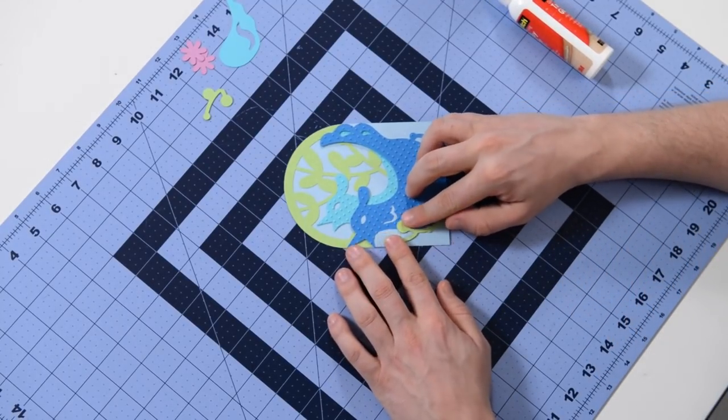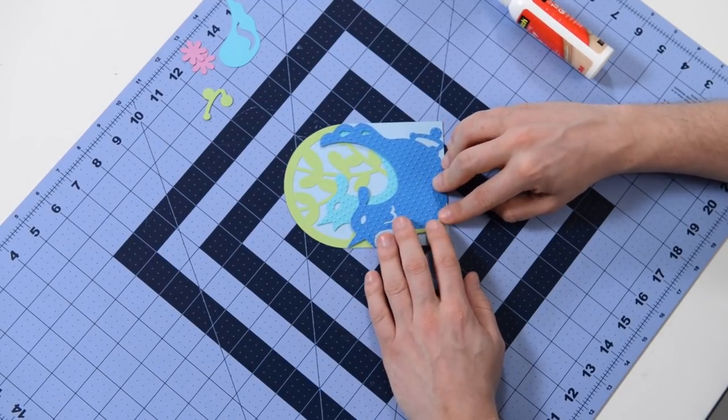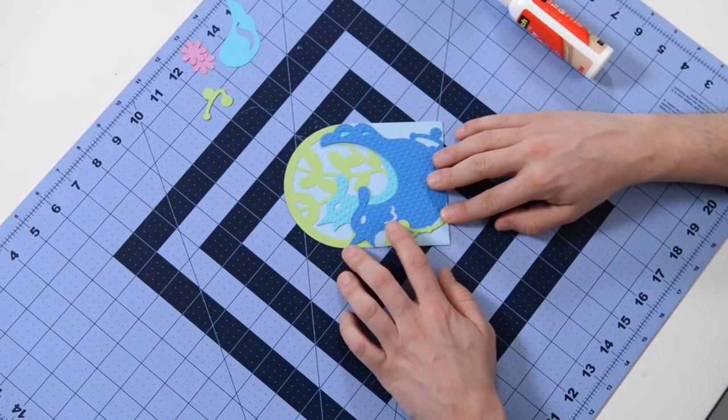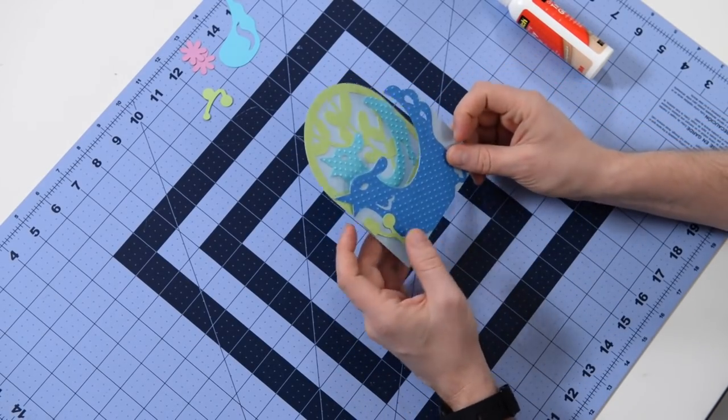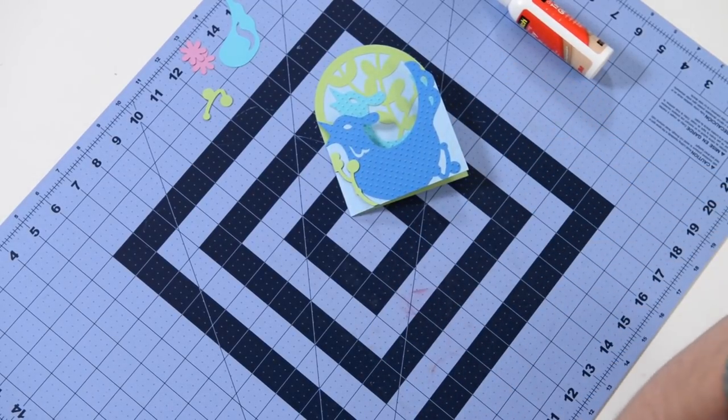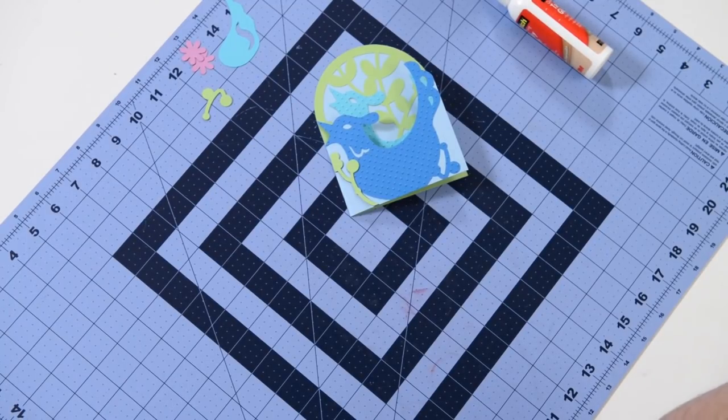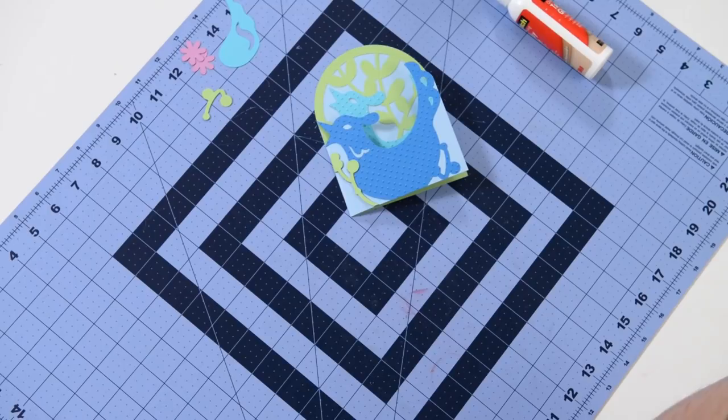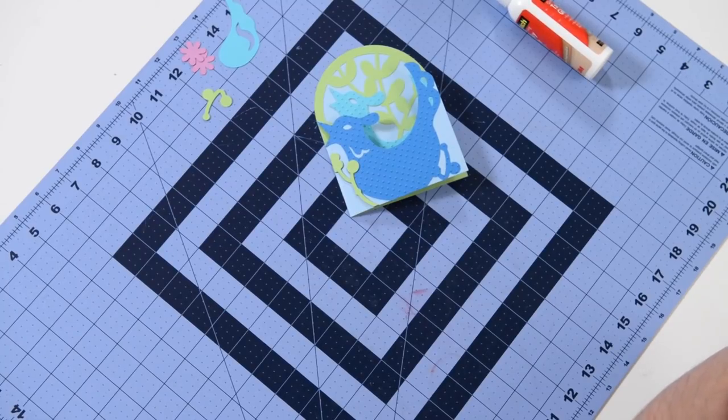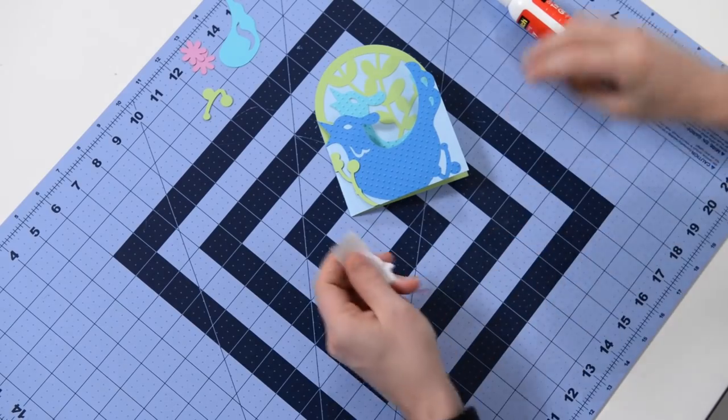So we're going to pop that right there. And because we embossed, this almost creates—well, it just gives this piece some added dimension because it's lifted up a little bit. If there are areas that don't stick because it's raised, you may need to go in and like this little area here, I'll show you what you can do about that if it didn't stick.